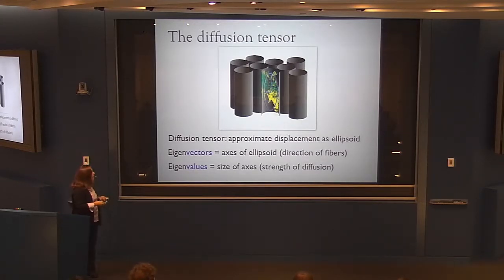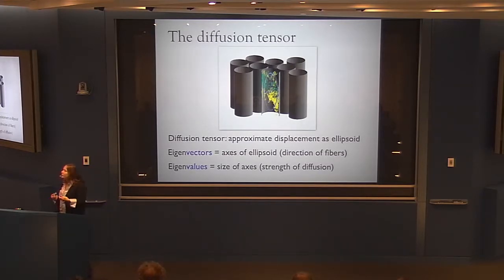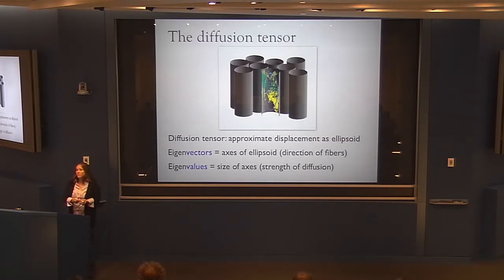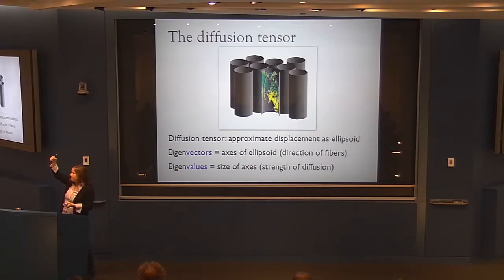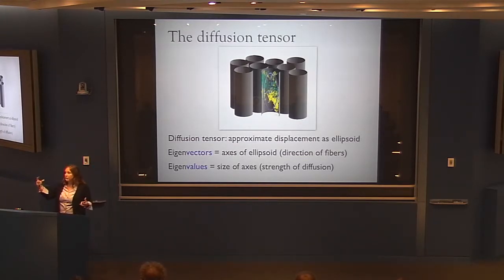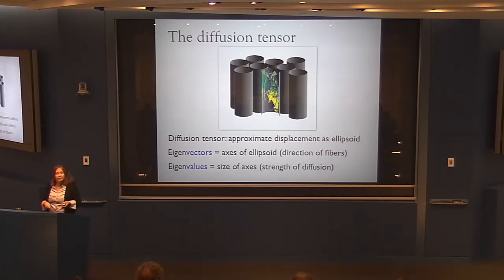The eigenvectors represent the directions of diffusion — one eigenvector represents the primary axis of diffusion and the other two are perpendicular to it. The eigenvalues represent how strong the diffusion is. Along the primary direction you'd expect a higher eigenvalue than in perpendicular directions.